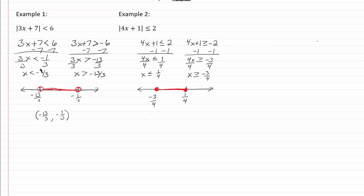Our interval notation then will be, we want a bracket because we have a closed dot, so it'll be from negative three-fourths to one-fourth with a bracket closing that.